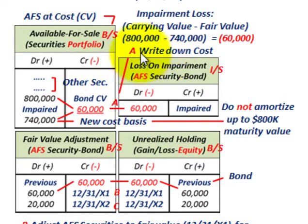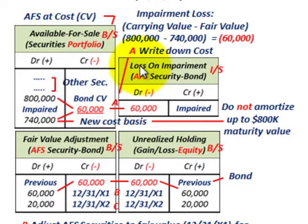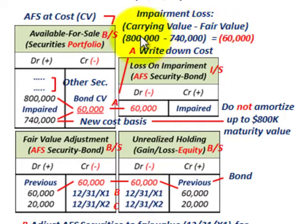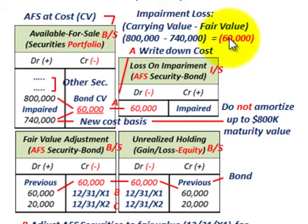Let's deal with the loss on impairment first. The bond's carrying value at 12-31-X1 is $800,000. To recognize the loss on impairment, which goes into the income statement, you compare the carrying value to the fair value: $800,000 carrying value minus $740,000 fair value equals a $60,000 loss. This was unrealized — now we're going to realize it on the income statement. You debit the loss on impairment account for $60,000, which is recognized on the income statement.